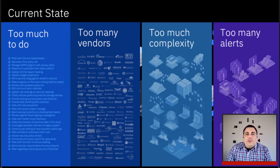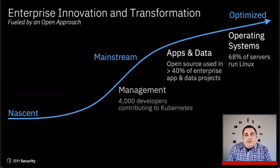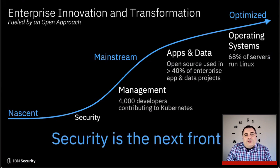How can we as an industry address it? I believe one place we can look to for inspiration is our predecessors in information technology — mature areas such as operating systems, applications, data, and technology management. Over the past two decades, all of these areas have come together to mature themselves with an open approach that's fueled innovation in every major technology category. The evidence is indisputable that open technology is winning the day. Security is the next frontier when it comes to open.